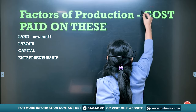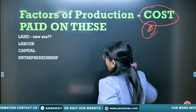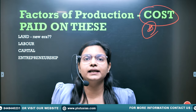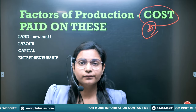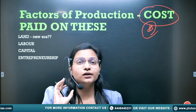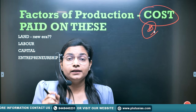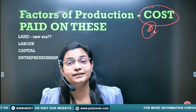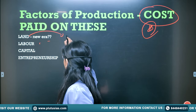Now you should understand there is a cost on every factor of production. If you are taking a land, maybe you are buying it — for buying the land there is a need of some money, so you are paying for that. Or maybe you are lending the land, so here you are paying the rent.